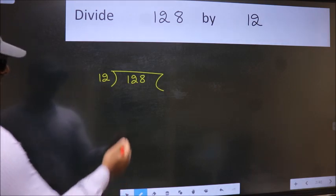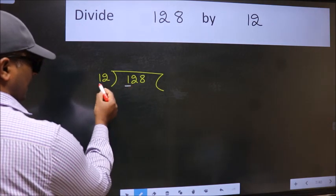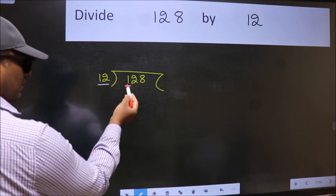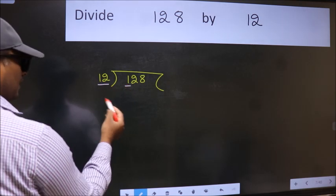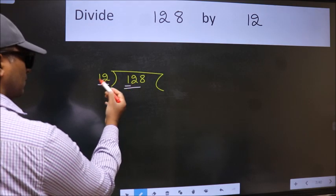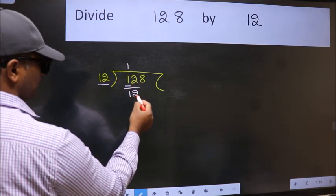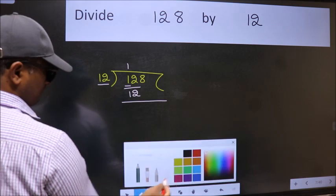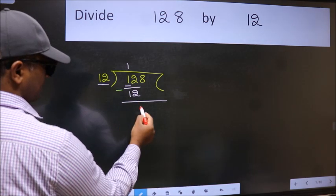Next, here we have 1 and here 12. 1 is smaller than 12, so take two numbers 12. When do we get 12 in 12 table? 12 ones, 12. Now we should subtract.